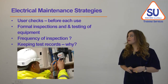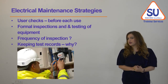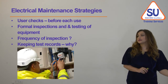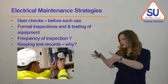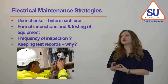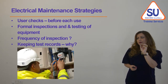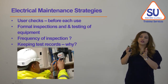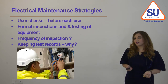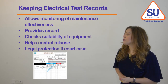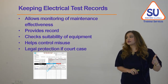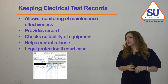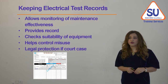It is very important to keep test records for many reasons — first, for legal requirements in case of any future court case, and also for identifying frequently occurring failures. This information may influence future purchasing decisions and serves as a valuable learning experience. Records may also reveal patterns, such as failures occurring shortly after maintenance by a particular person, indicating a problem with the maintenance quality. Records allow us to monitor maintenance frequency, verify that our maintenance plan is being followed, check equipment suitability, and help control misuse of equipment.